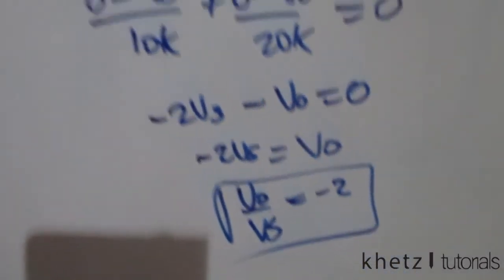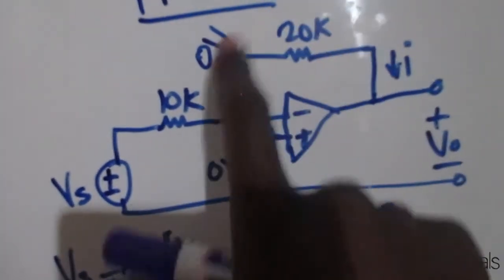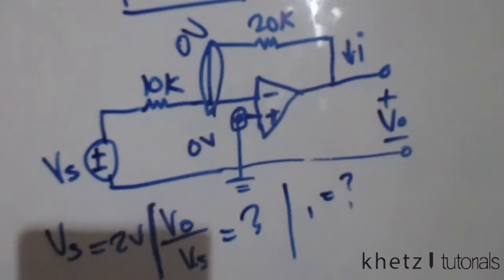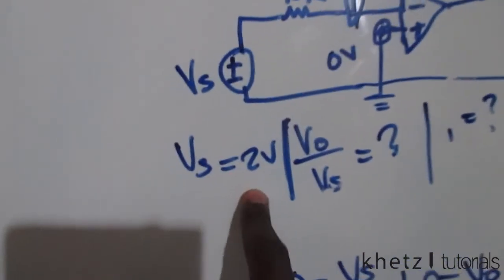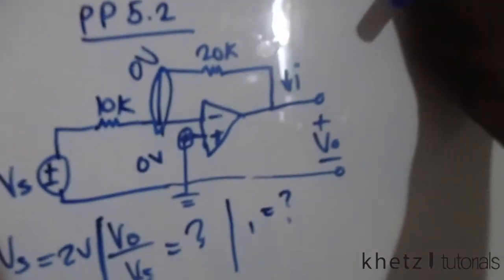Now moving on to find the current. Moving on to finding the current i which is indicated across this resistor value. We're given the value of this Vs, so there are quite a few ways you can find this i.